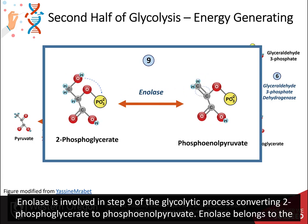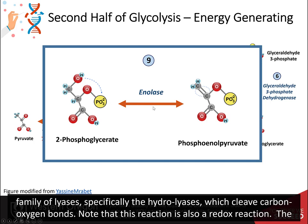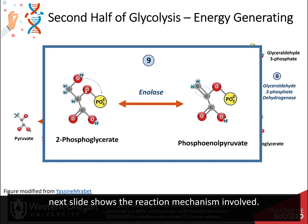Enolase is involved in step 9 of the glycolytic process, converting 2-phosphoglycerate to phosphoenolpyruvate. Enolase belongs to the family of lyases, specifically the hydrolyases, which cleave carbon-oxygen bonds. Note that this reaction is also a redox reaction. The next slide shows the reaction mechanism involved.